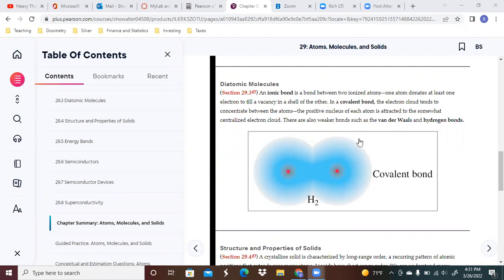In a covalent bond, the electron cloud tends to concentrate between the atoms. The positive nucleus of each atom is attracted to the somewhat centralized electron cloud. There are also weaker bonds, such as the van der Waals and hydrogen bonds.